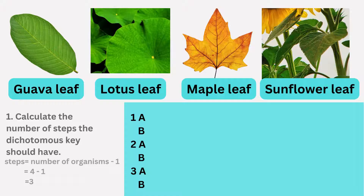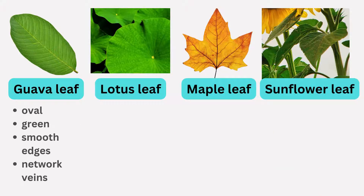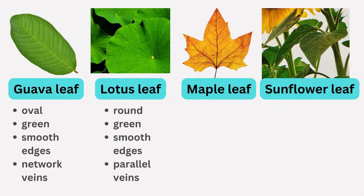Examining the features of each leaf, we see variations in shape, color, edges, and vein patterns. The guava leaf has an oval shape, vibrant green coloration, smooth edges, and an intricate network of veins. The lotus leaf has a round shape, lush green hue, smooth edges, and parallel veins.